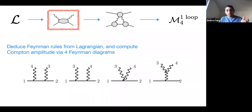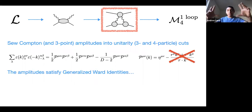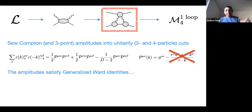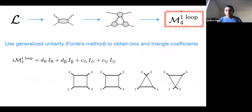Once we have our Compton amplitude as an ingredient for the unitarity cuts, we sew them into two-particle cuts, then three-particle cuts, and then four-particle cuts. One nice thing about the amplitudes is that they satisfy a generalized Ward identity: in the sum over states one should produce a projector-like structure, and because of the form of our amplitude the non-physical terms do not contribute. We can use a ladder-like structure to sum over gravitons, and finally from the cuts use generalized unitarity methods to obtain box and triangle coefficients.